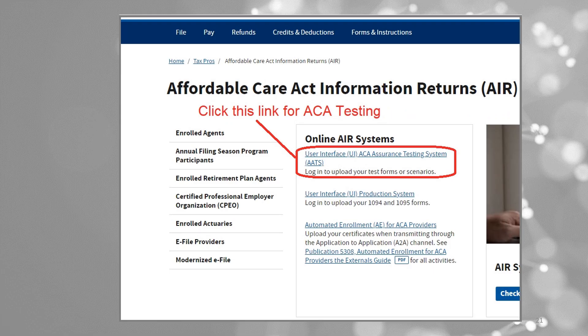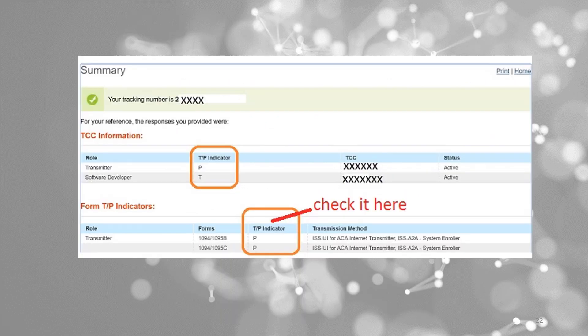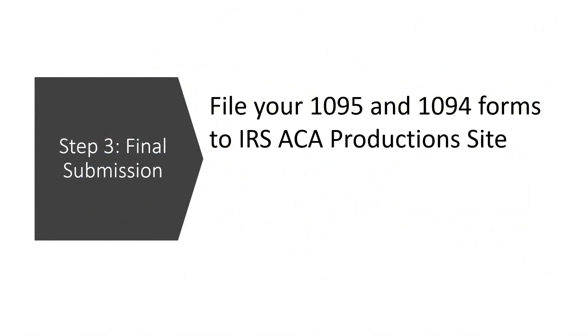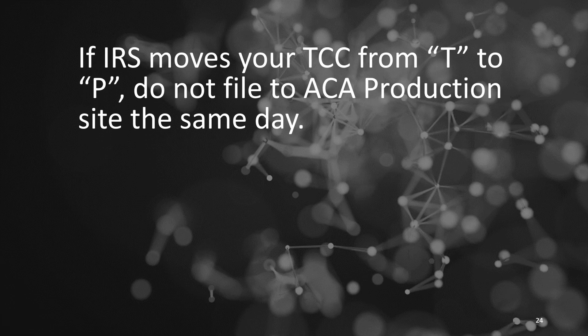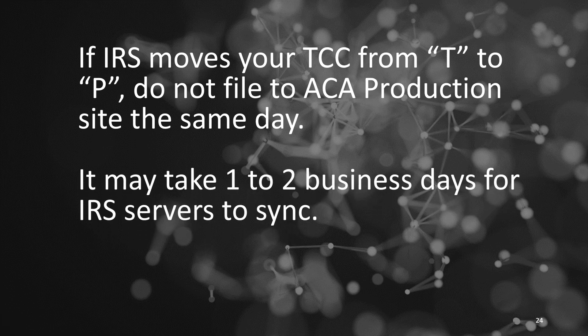It takes a few days for the IRS to update your TCC status to production. Keep an eye on it, and don't hesitate to reach out to the IRS if needed. Once your TCC has been updated to P, the production status, it's prudent to wait an additional 1-2 business days to ensure the IRS servers have fully recognized this change.